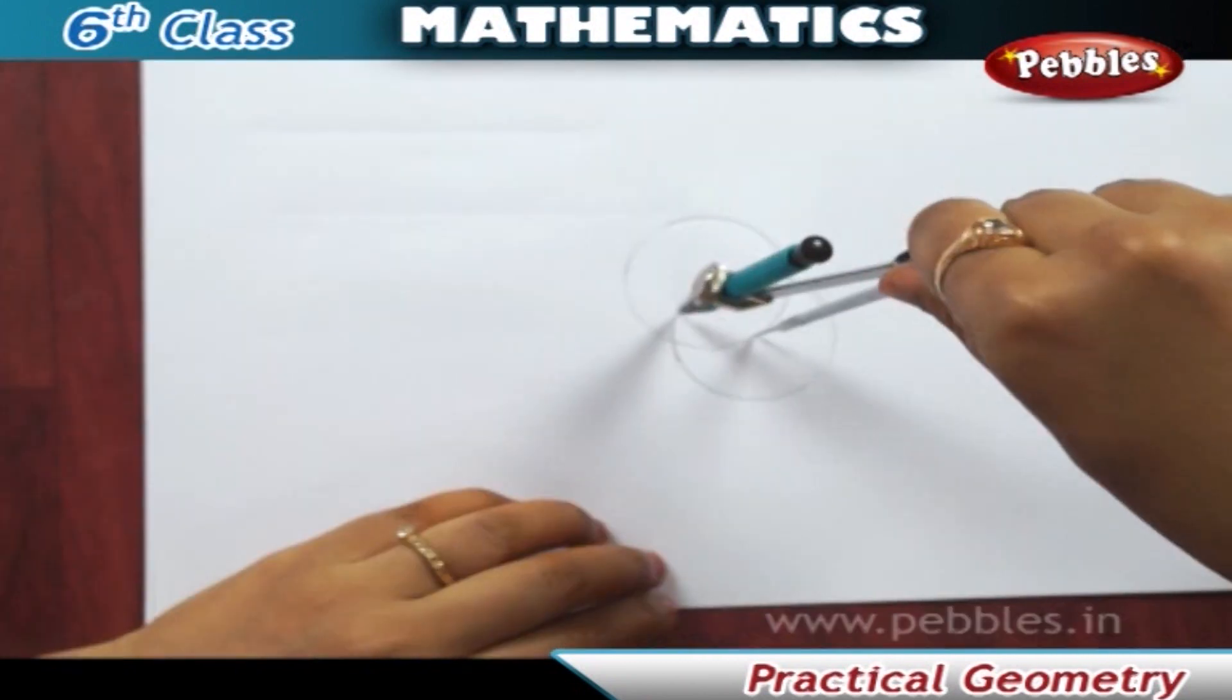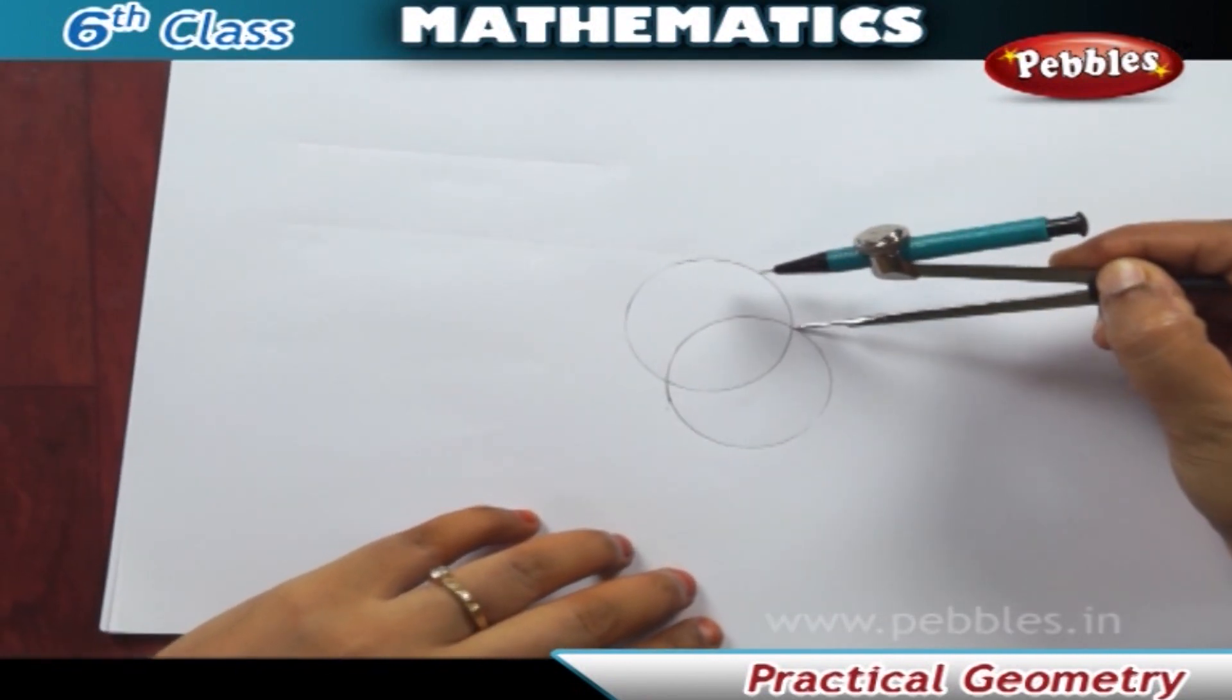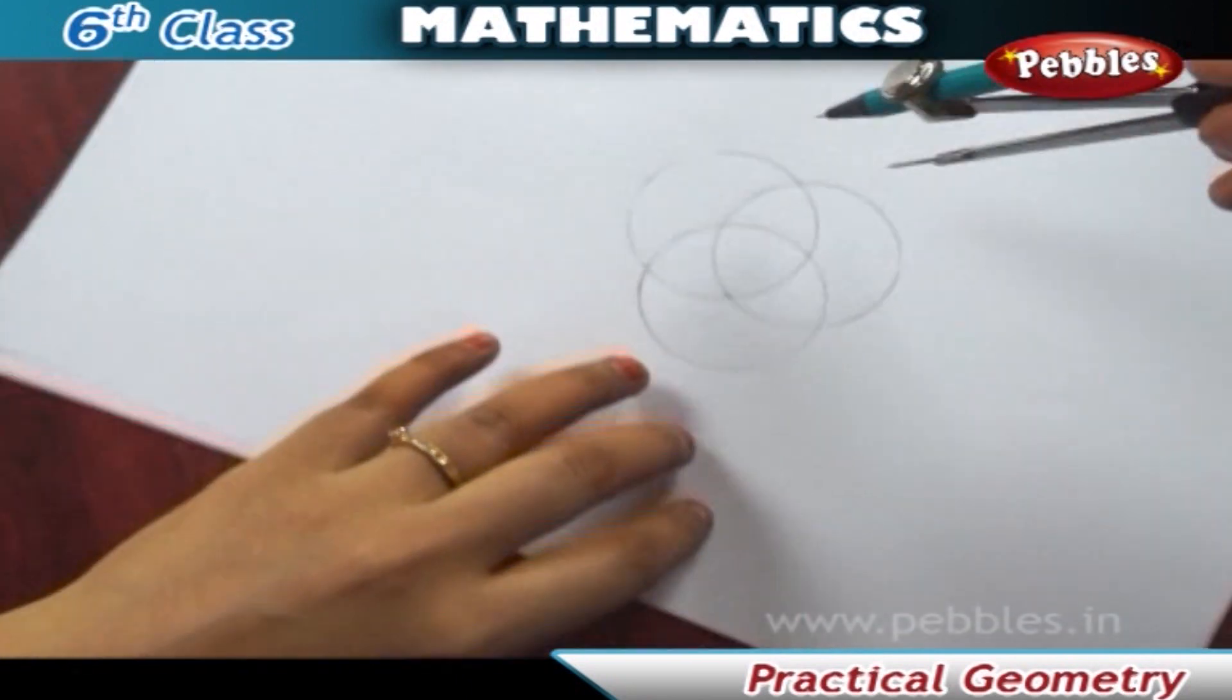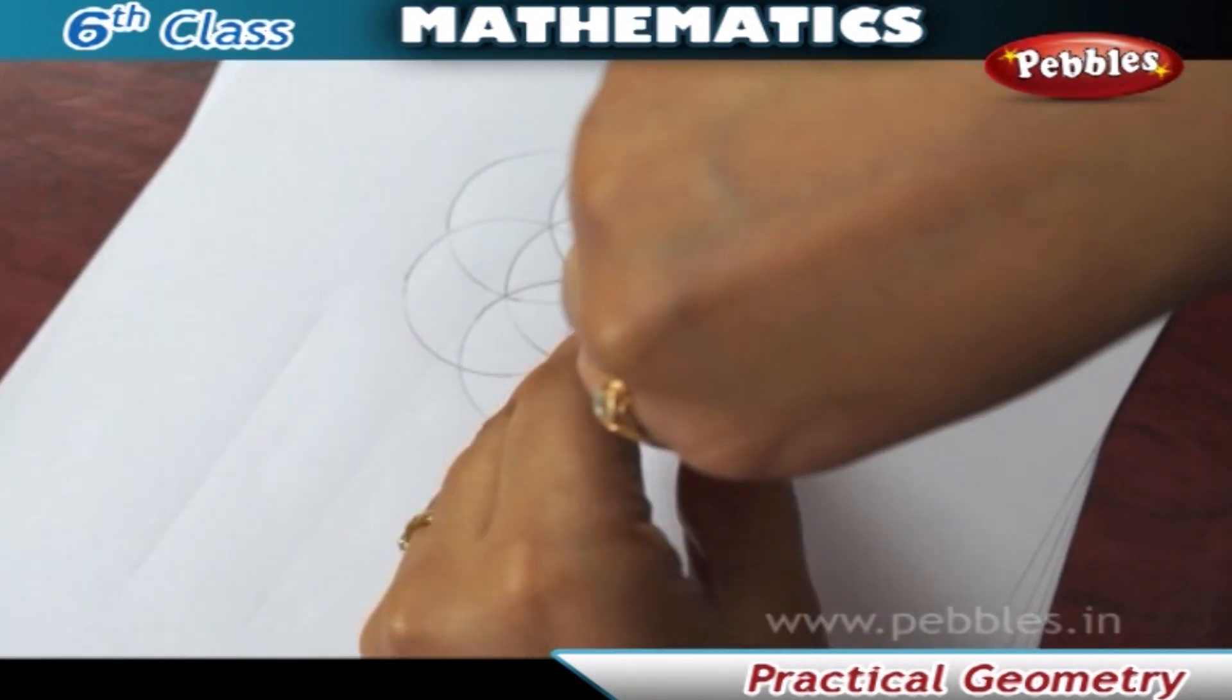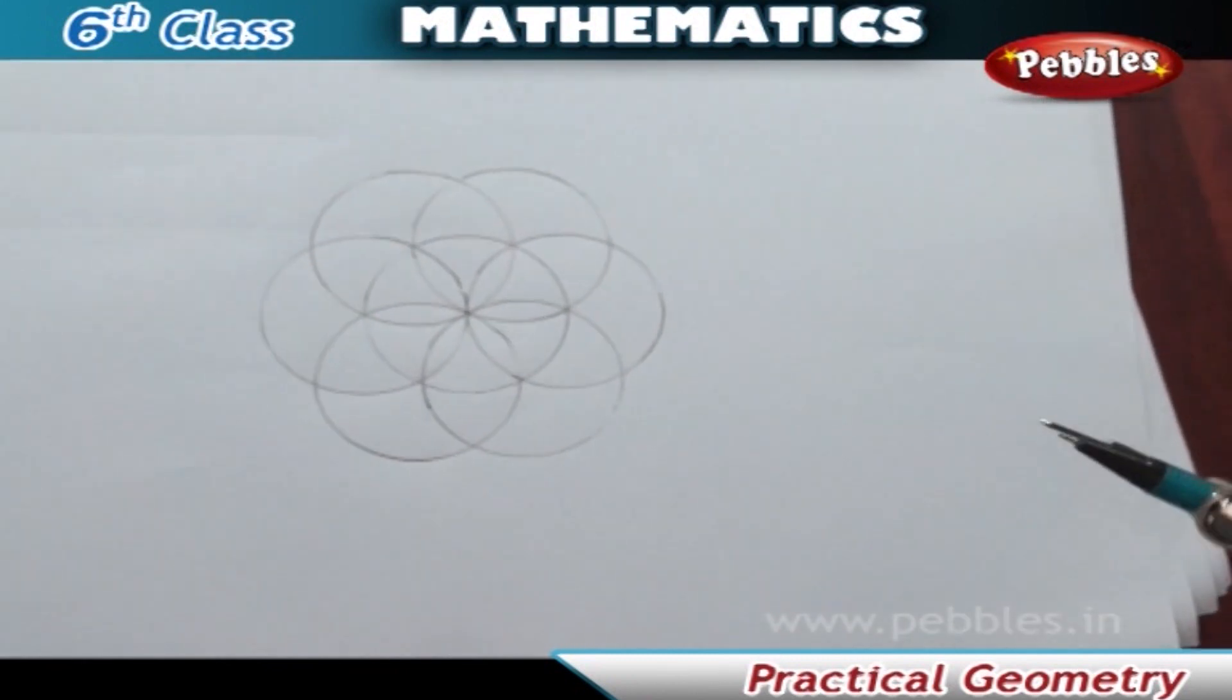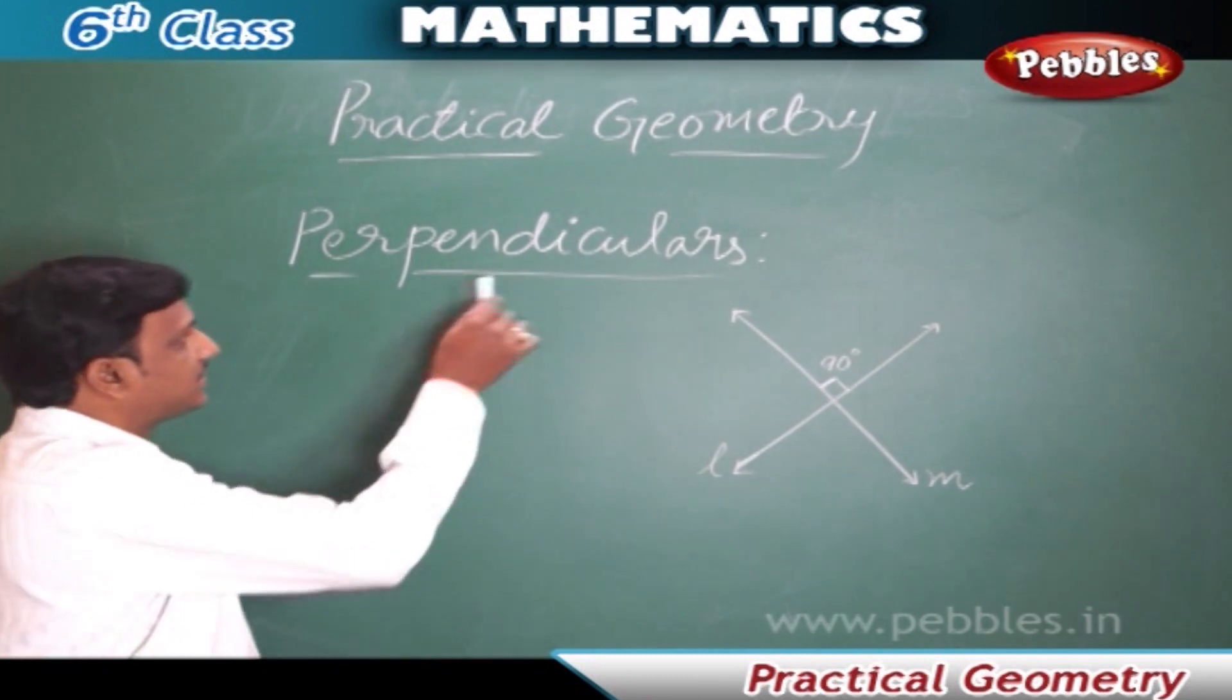Let us see an activity with circles. Make a circle of desired radius in your notebook. Make a point on it. Put compasses on it and make a circle without changing the radius. It will cut the circumference at two points. On both points, repeat the process again. You will get a beautiful picture as shown. Color it as your wish.